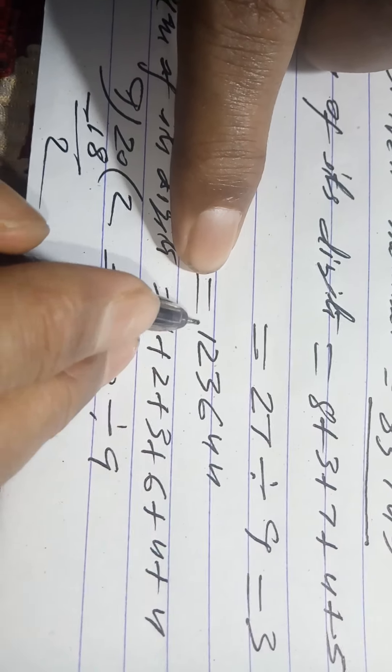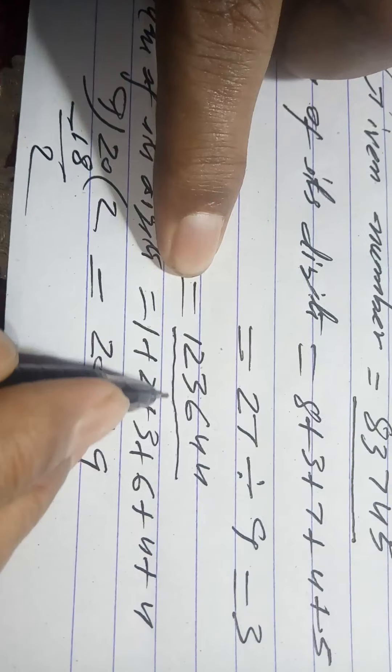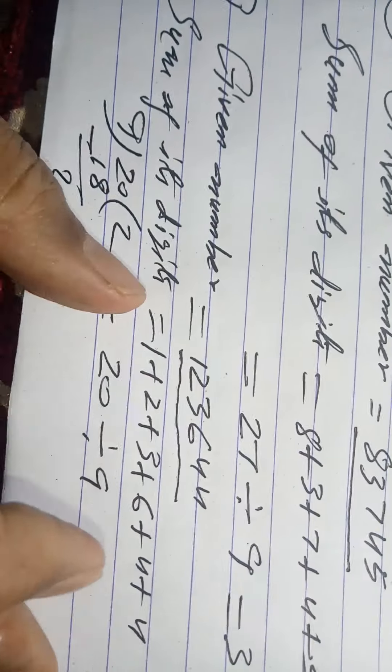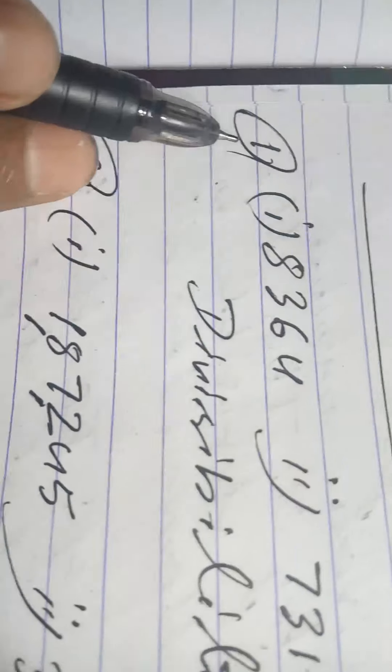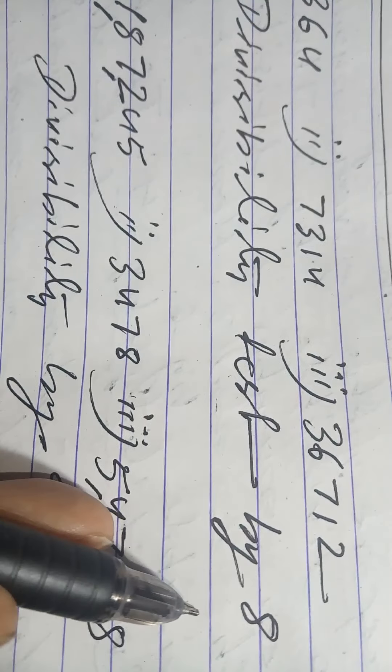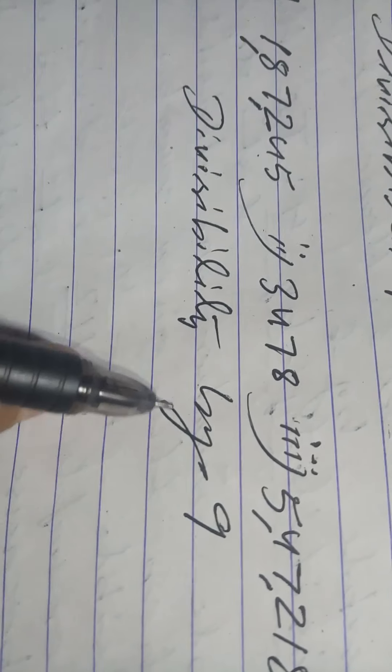So the given number is not divisible by 9. Students, here are some questions for practice: Question 1 — test these numbers for divisibility by 8 (three numbers given). Question 2 — test these numbers for divisibility by 9 (three numbers given). Okay students, thank you.